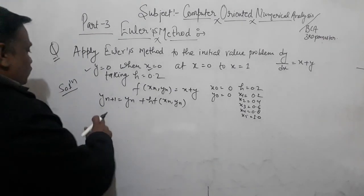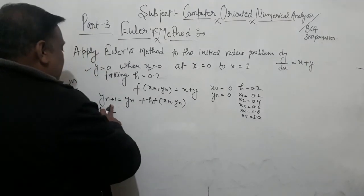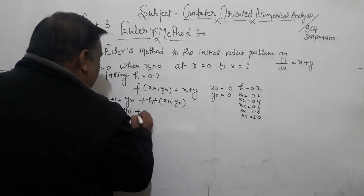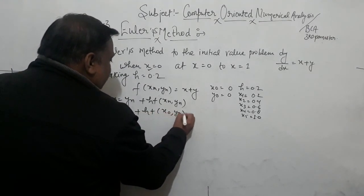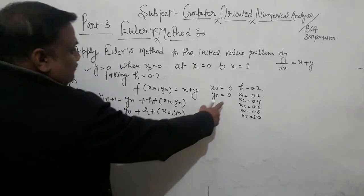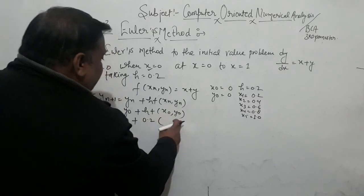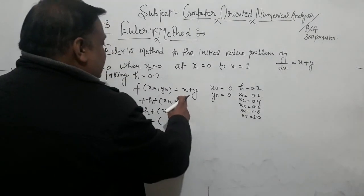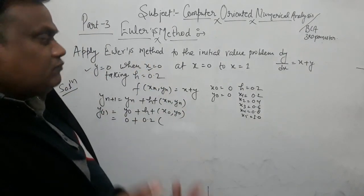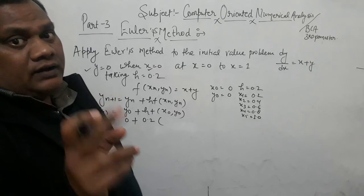What is Y1? According to the formula, Y1 is equal to Y0 plus h·f(x0, y0). Y0 is equal to 0, so Y1 is equal to 0.